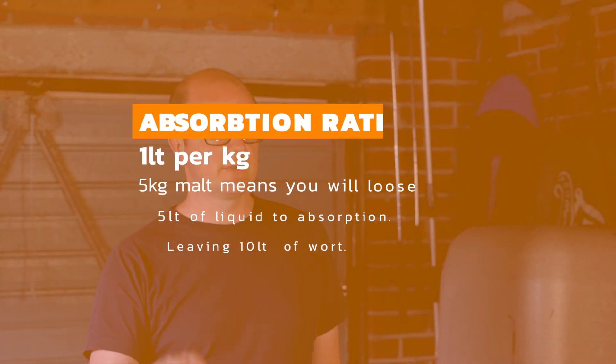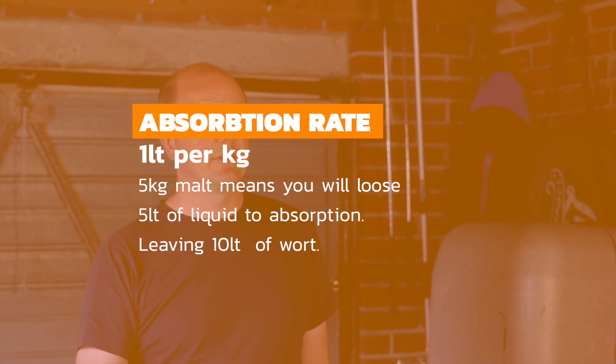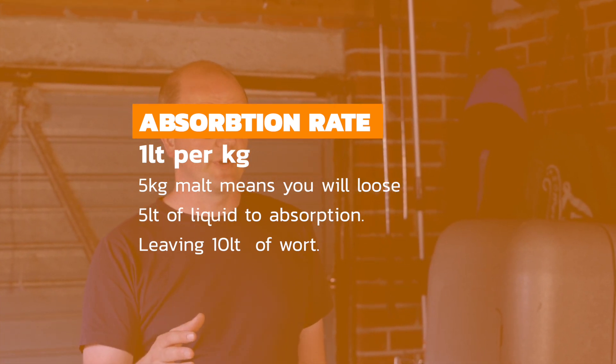You've mashed in your five kilograms of malt with 15 liters of strike water. That triggers an absorption rate — the rule-of-thumb figure is one liter per kilogram of malt. So 15 liters of strike water minus five liters absorbed by five kilograms of malt gives you 10 liters of wort, or first runnings. We have our 15 liters in, five kilograms of malt absorbed five liters, leaving us with 10 liters of wort or first runnings.